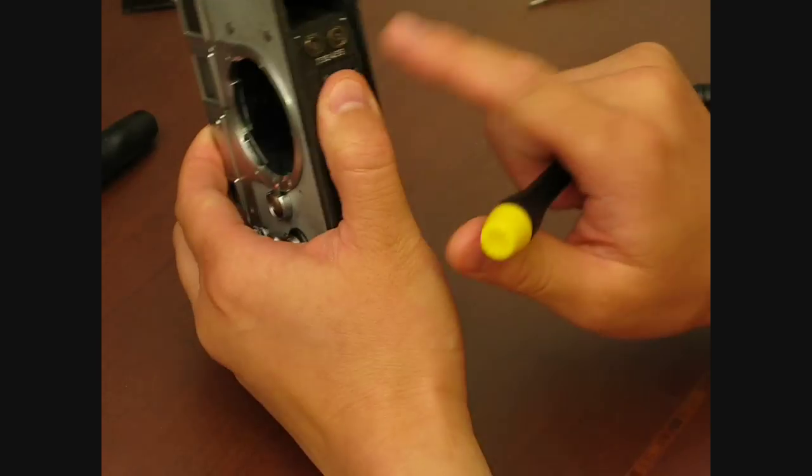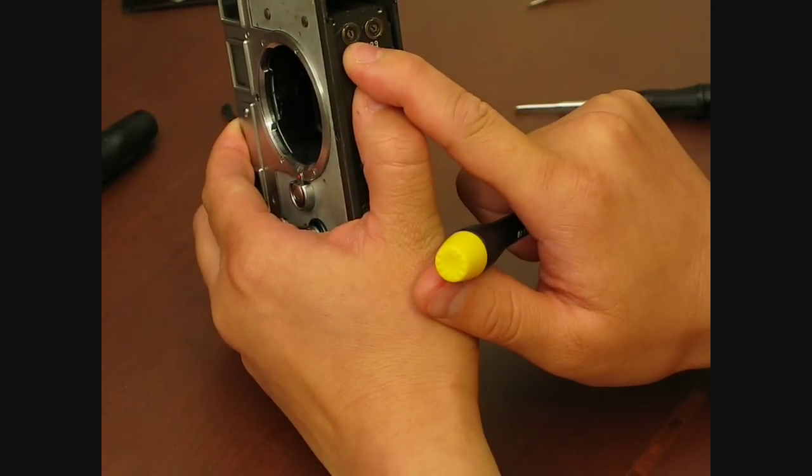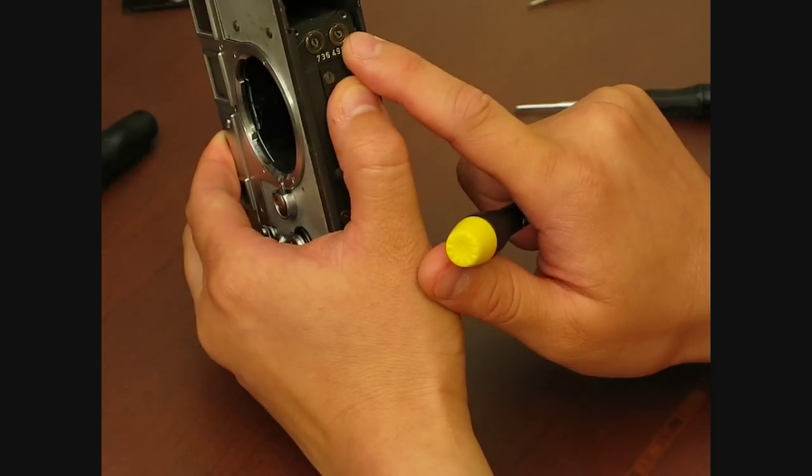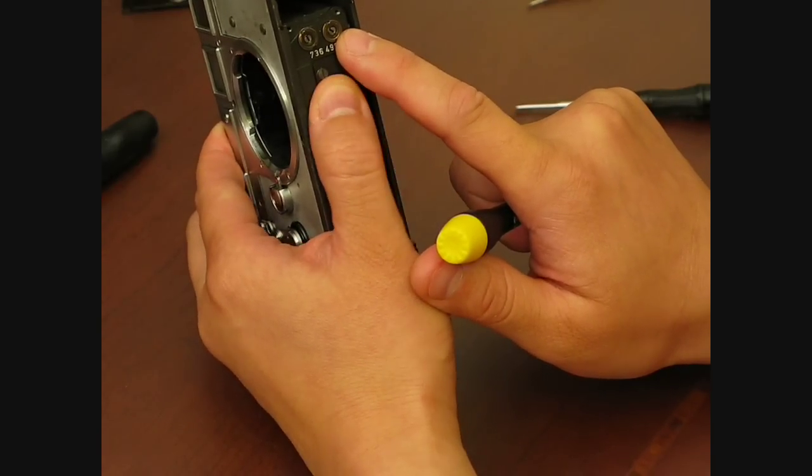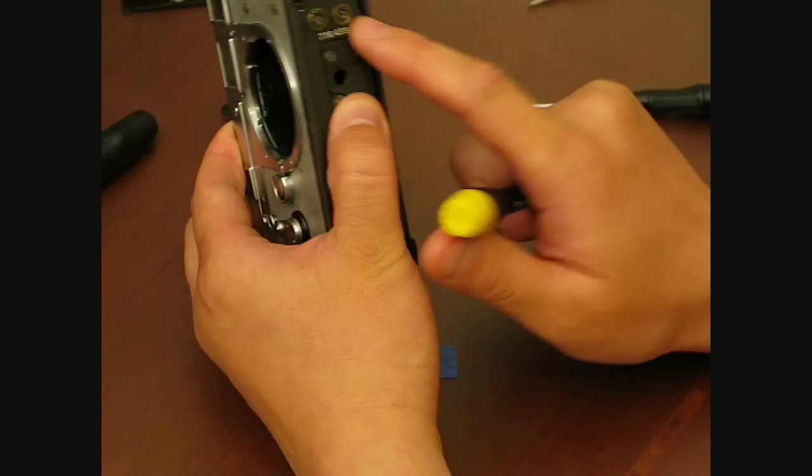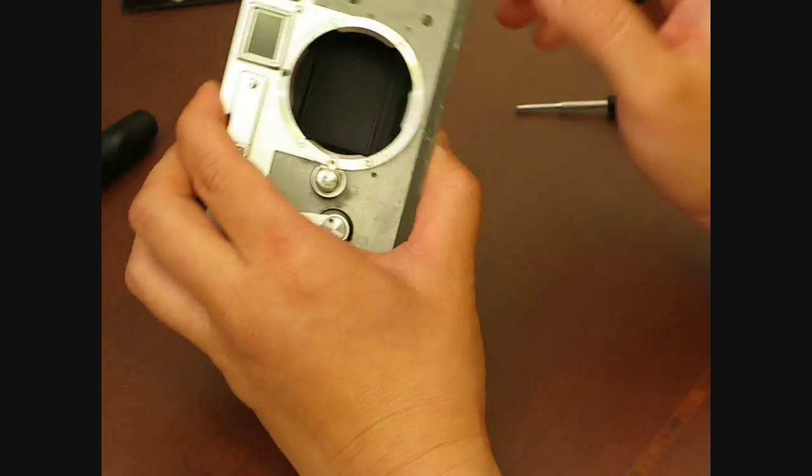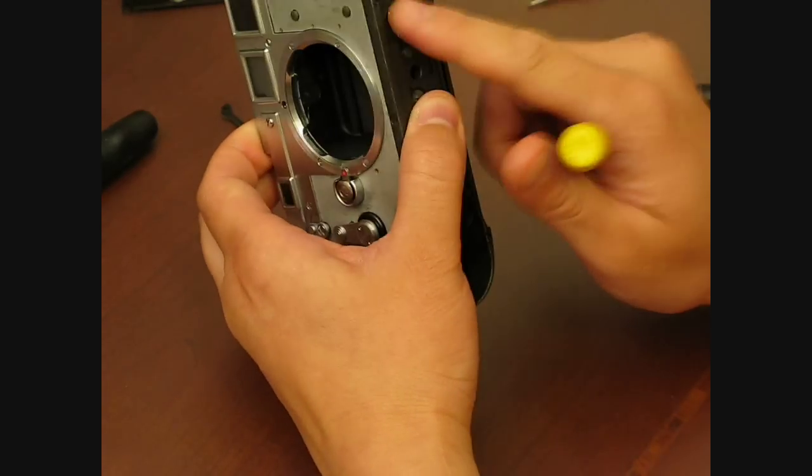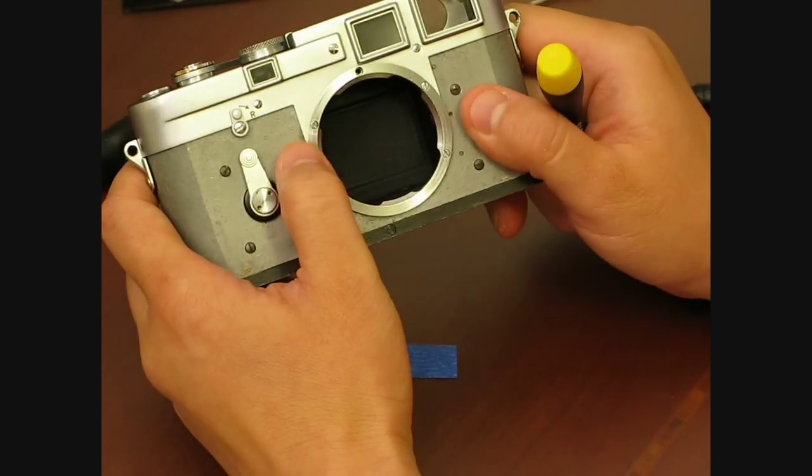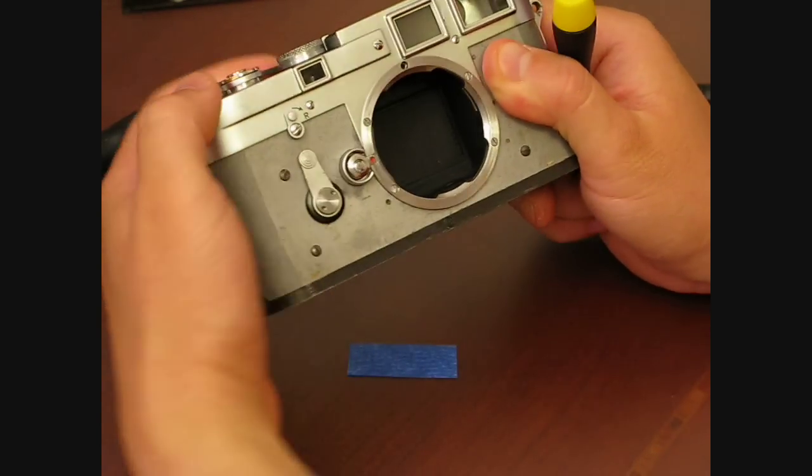To the front of the camera, this is the closing curtain take-up roller. And next to it on the right is the opening curtain take-up roller. So you may need to adjust both. In this particular case, I only needed to adjust the front curtain or the closing curtain.